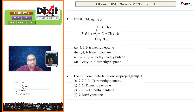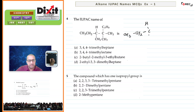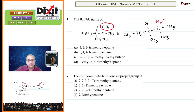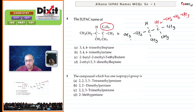Correct IUPAC name for the compound. Whenever this type of C4 or C3 structure is given, first draw the carbon skeleton: CH3, CH2, C, CH3, then this carbon atom CH3, and the terminal CH3. The C4H9 group will be CH2CH2CH2CH2CH3. Now consider the longest continuous carbon chain carrying all the substituents. The longest chain will be 1, 2, 3, 4, and then continuing. Number the chain from the end nearer to the side chain.